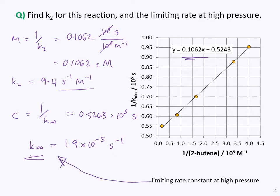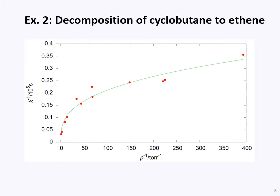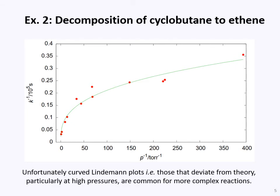The issue is that very few reactions in reality actually show this ideal linear behavior. They tend to deviate from the theory, particularly at high pressure. At low pressures — high values of 1/P — you get a relatively linear dependence, but as you move to higher pressures or smaller values of 1/P, there is a significant deviation from the theory. This kind of curved behavior is far more common for most reactions.